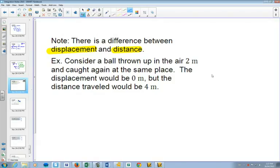The idea is that distance is how far you would travel. So if you throw a ball up in the air and you catch it exactly where you threw it from, it hasn't ended anywhere other than it started from. But its distance, it's traveled two meters up and two meters down, so it's traveled four, but its displacement would be zero.